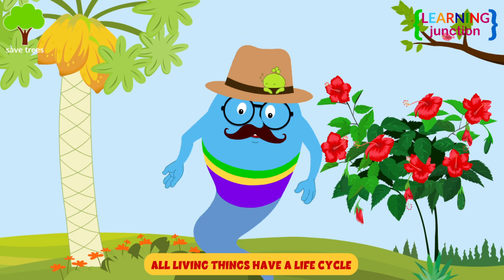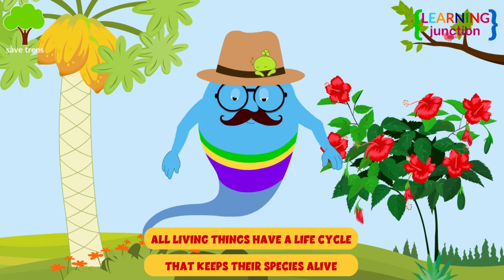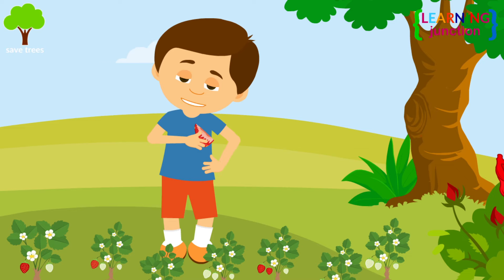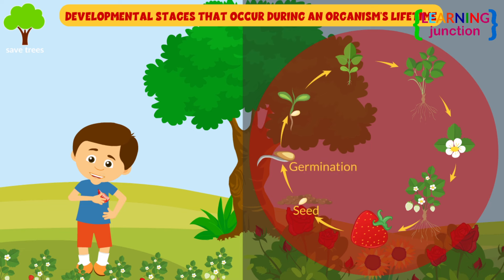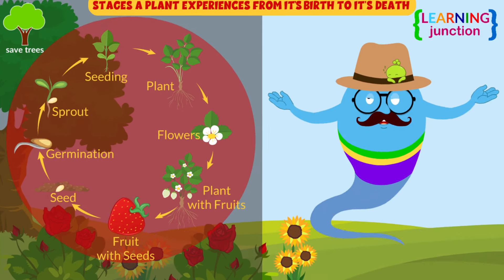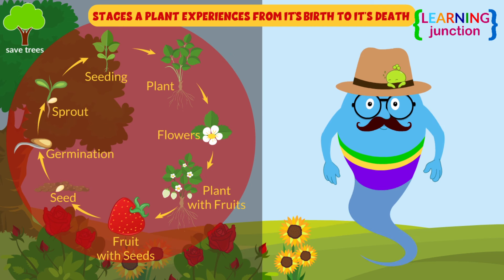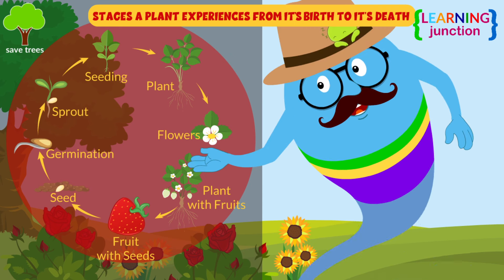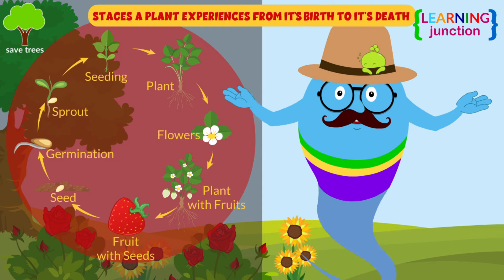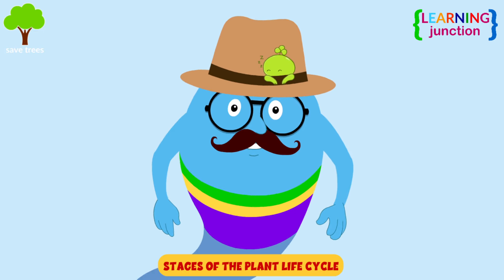All living things, including plants, have a specific life cycle that keeps their species alive. A life cycle is defined as the developmental stages that occur during an organism's lifetime. The stages a plant experiences from its birth to its death, and when the cycle repeats, they're described as the life cycle of a plant. Let's learn about the stages of the plant life cycle.